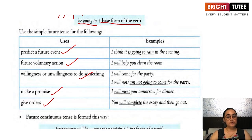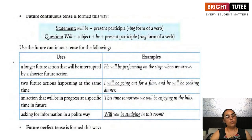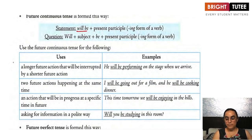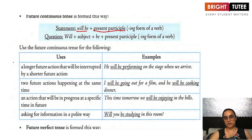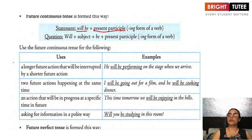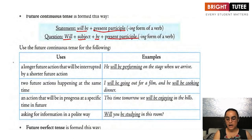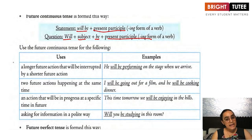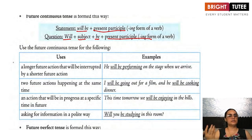Next is the future continuous tense. The structure is 'will be' plus the -ing form of the verb. For example: she will be going to Amritsar, they will be returning next week, I will be learning a new language. For questions, the structure is 'will' plus subject plus 'be' plus the -ing form: will he be returning home on time? Will they be learning this project well? Will you be helping me in the work?